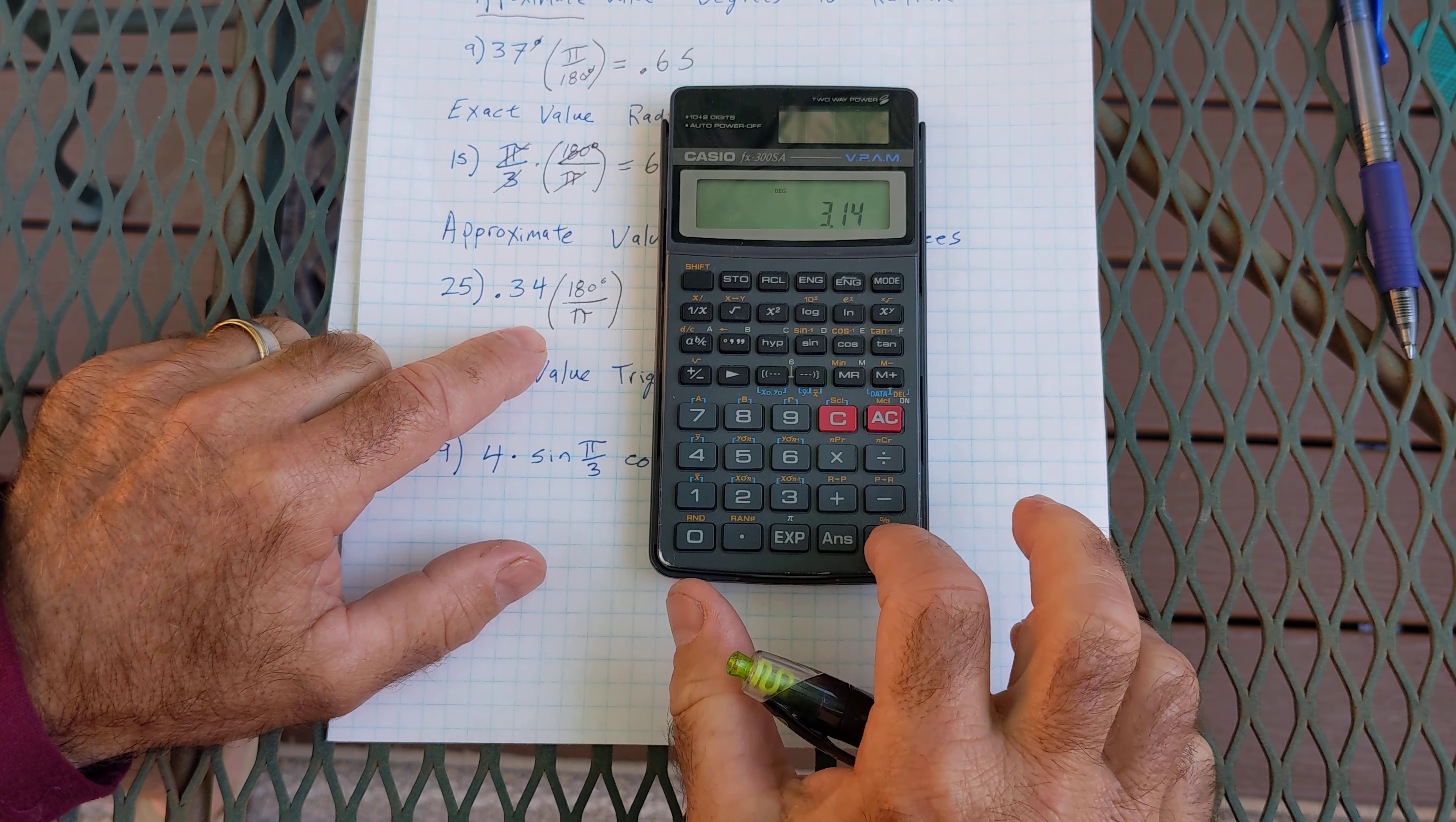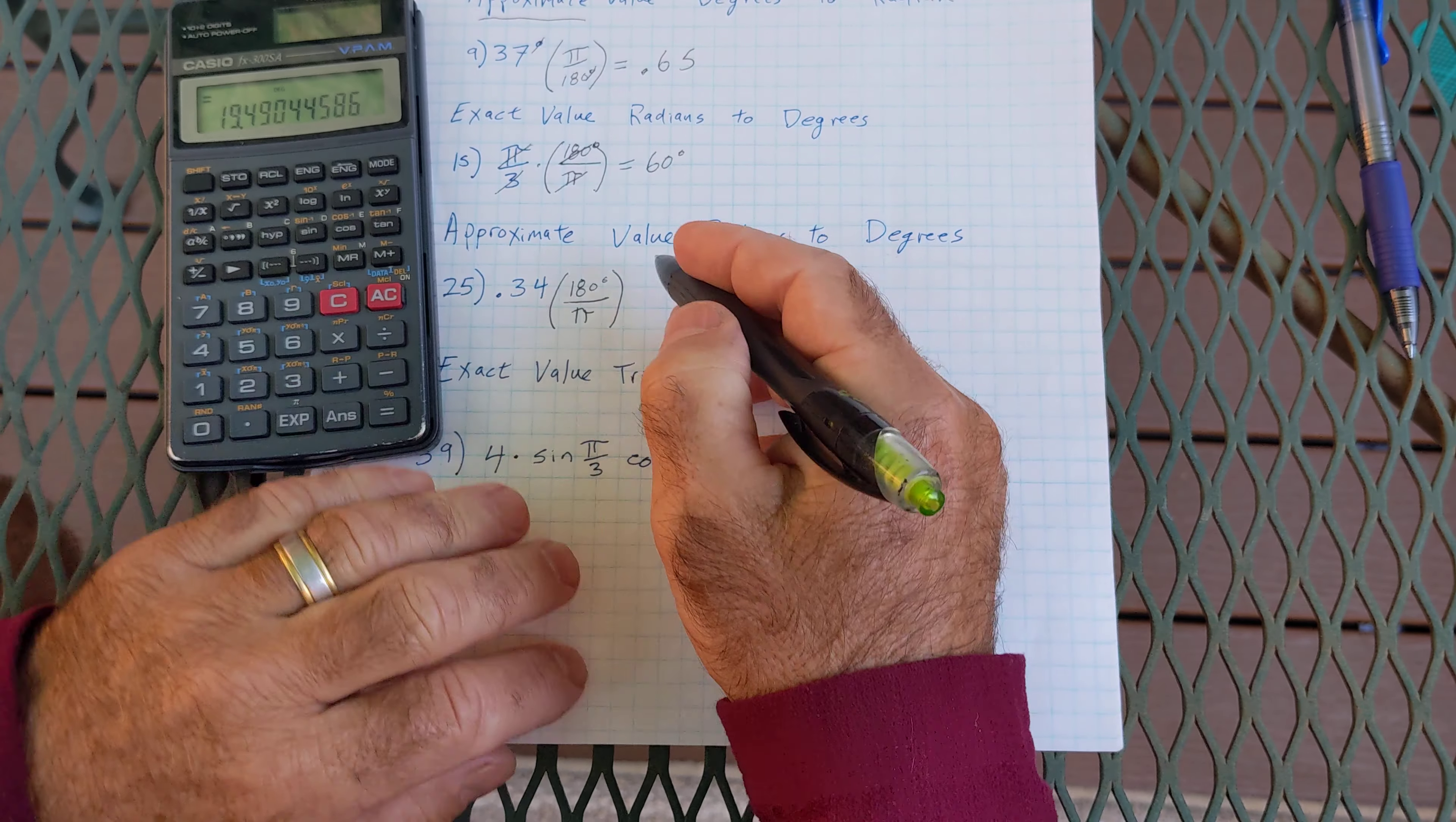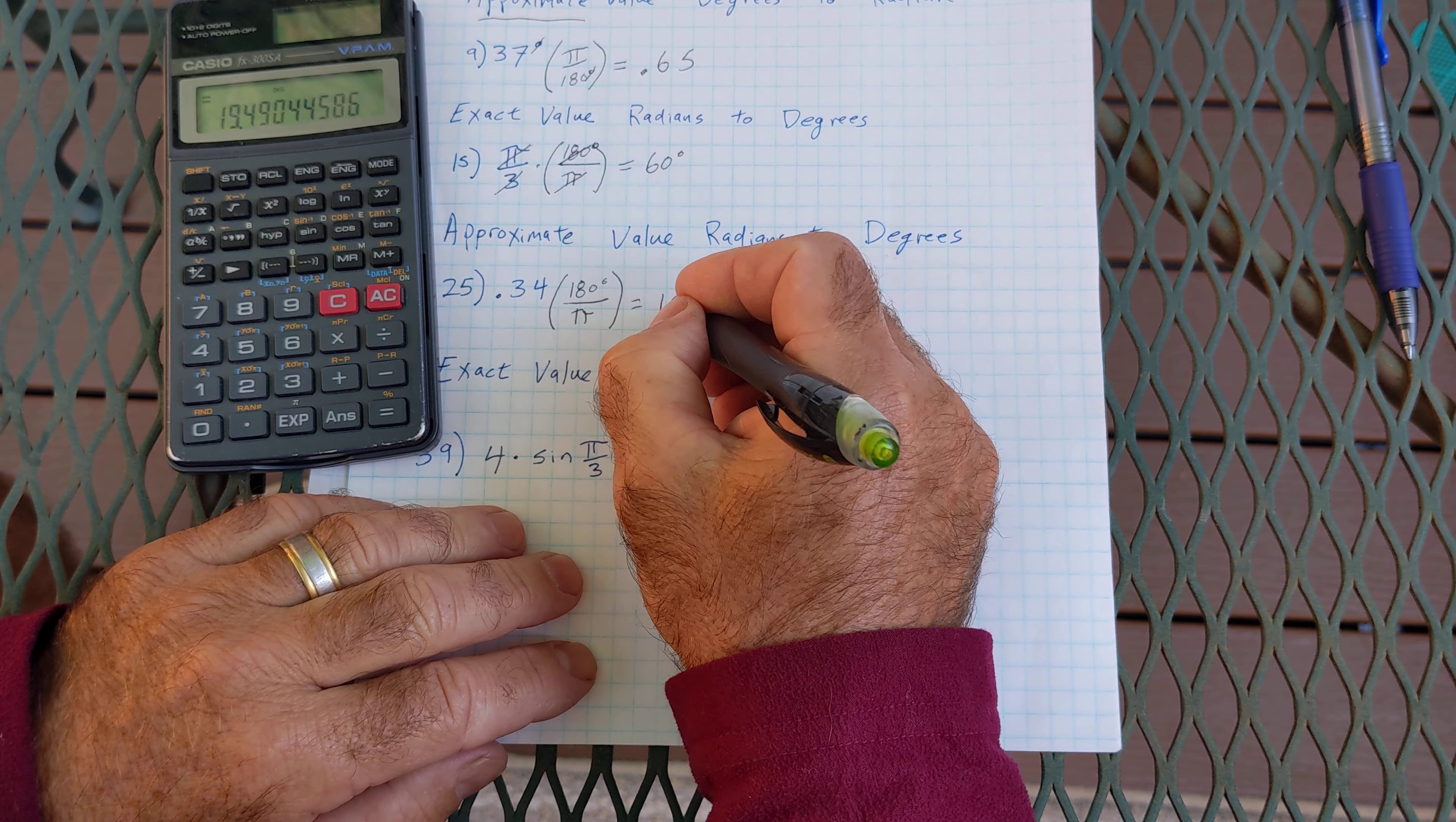So I'm going to go 0.34 times 180 equals divided by that pi right there. 3.14 equals and I get 19.5. And that's going to be degrees.